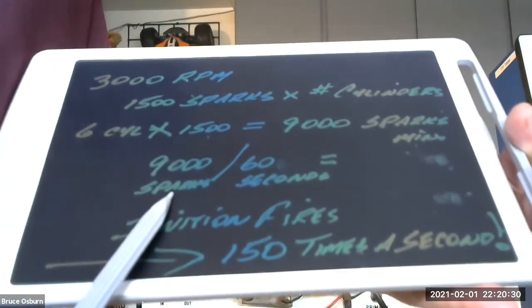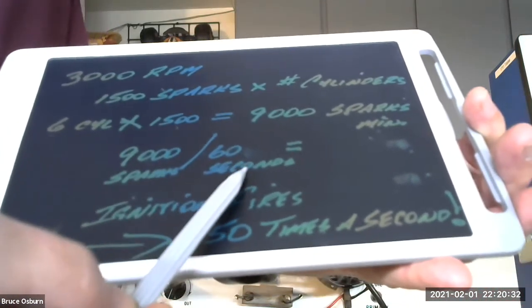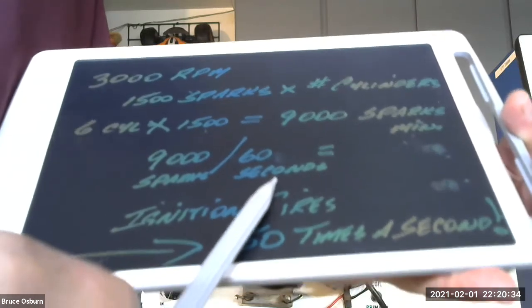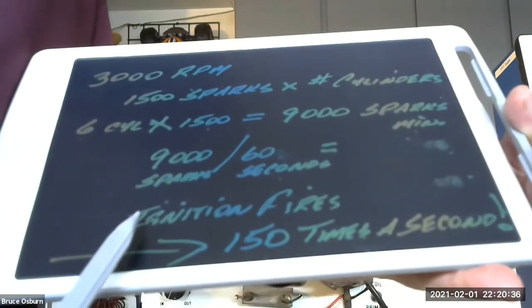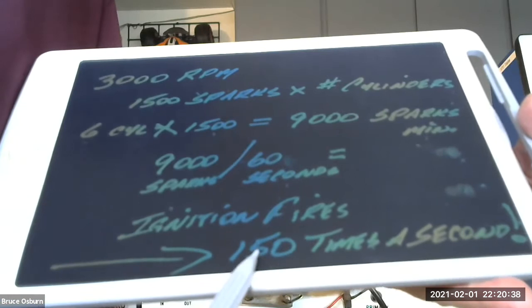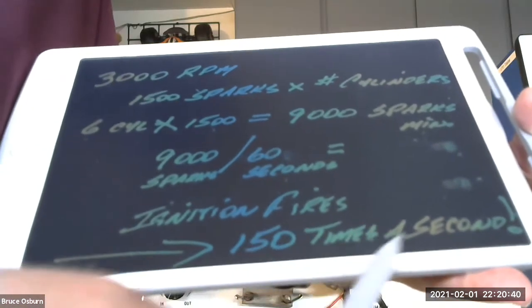9,000 sparks per minute, divide that by 60 seconds, and you'll end up with the ignition firing 150 times a second.